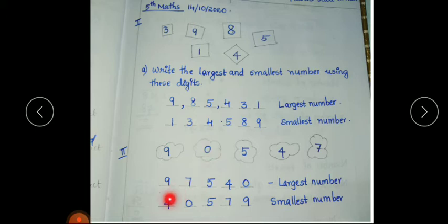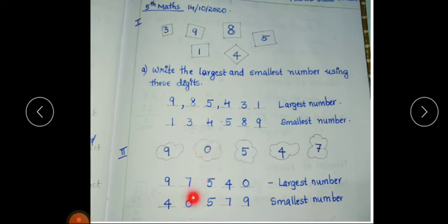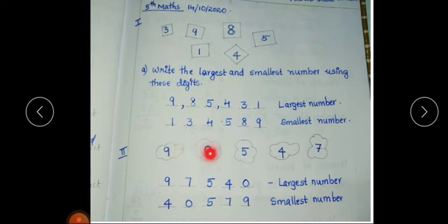While writing the smallest number, the smallest digit among these is zero. But if we write zero in the first place, there is no value for it. So always, while writing the smallest number, you have to write zero in the second place. After zero, the smallest digit is four, so write four in the first place, then zero, then five, then seven, then nine. The smallest number is forty thousand five hundred and seventy-nine.